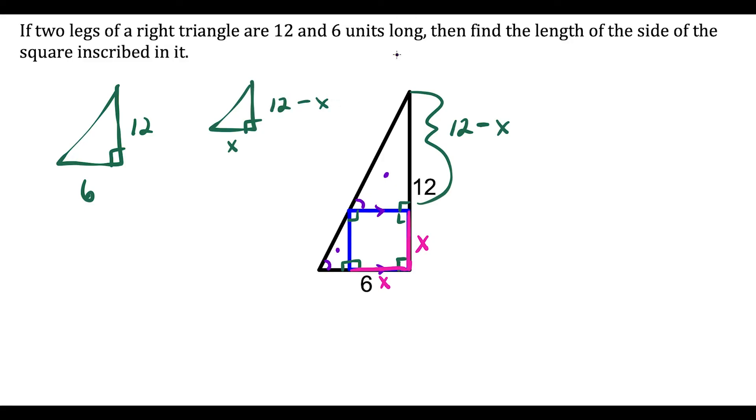From here, we could set up a proportion. We know these two triangles are similar, so we could say that 12 over 6 equals 12 minus x over x. I'm comparing the vertical leg to the horizontal leg—that has to be the same as in this triangle, the vertical leg over the horizontal leg.